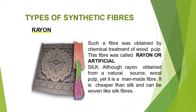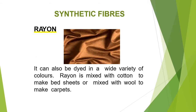Rayon is called artificial silk. It is not fully synthetic because it contains wood pulp, which comes from a natural source. It is made by chemical treatment of wood pulp, producing a shining, low-cost fabric. Rayon can be dyed in different colors, mixed with cotton for making bedsheets and clothing, and when mixed with wool it can be used for making carpets. It is also a very skin-friendly fabric.